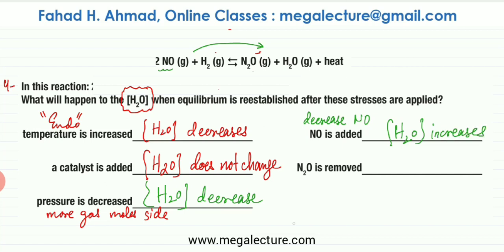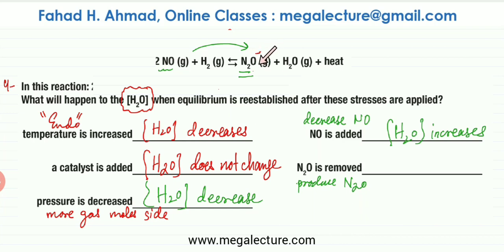The last part is that N2O is removed. The equilibrium will try to produce more N2O by doing the opposite. The forward reaction is favored because that will produce more N2O. If the forward reaction is favored, the quantity of H2O also increases. So the concentration of H2O increases.